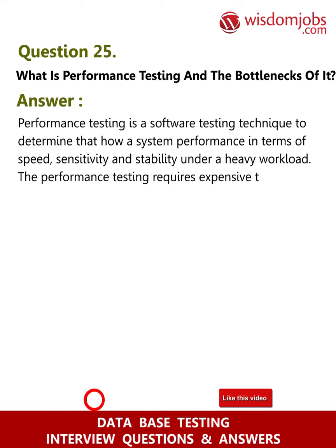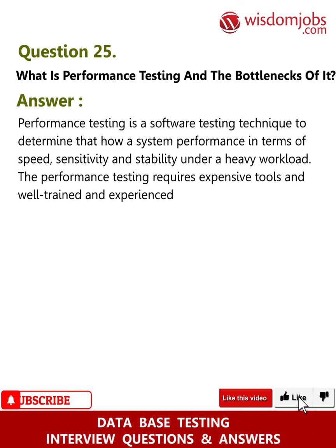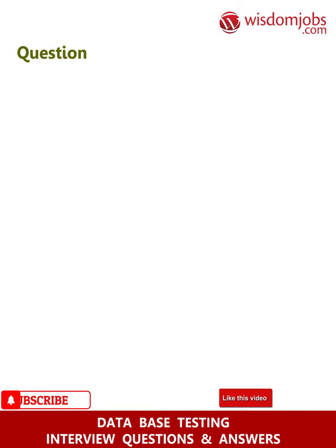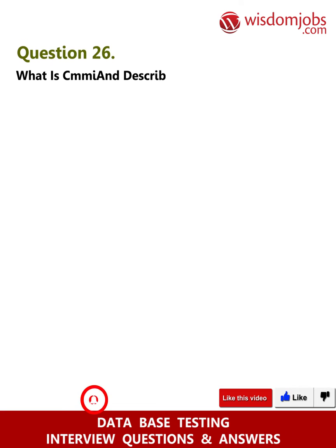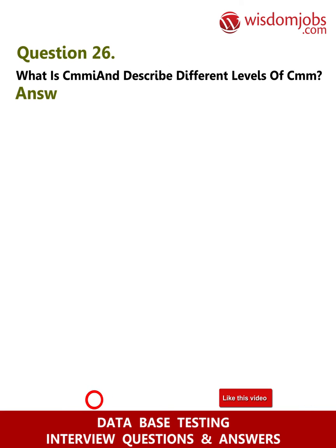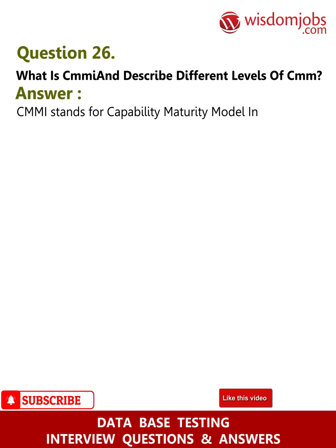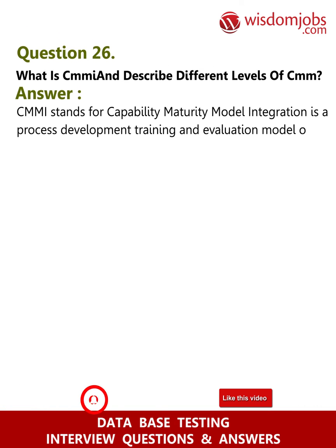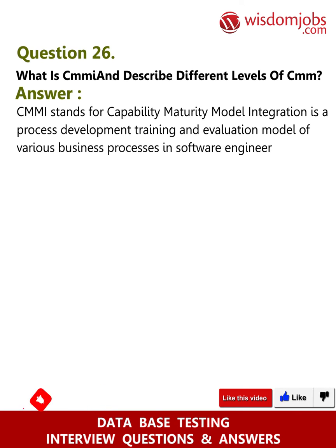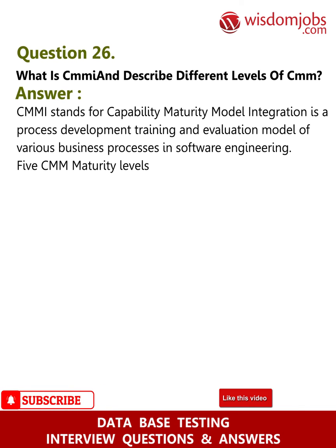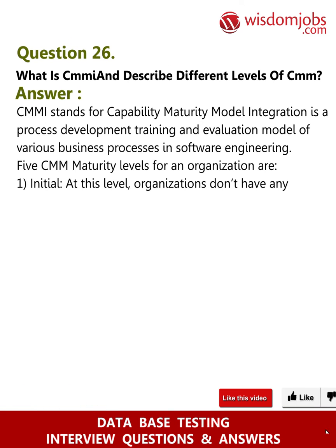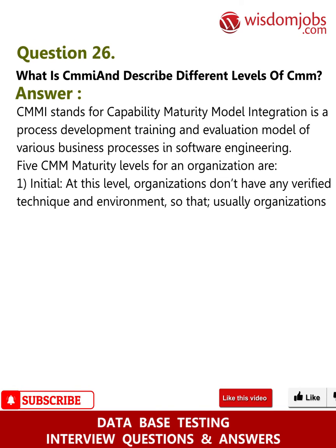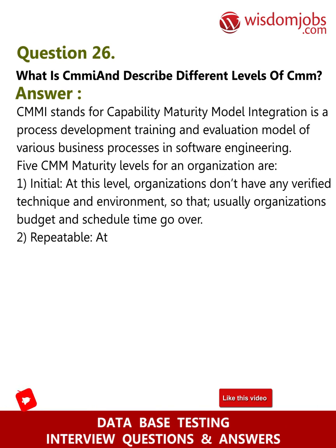Question 26: What is CMMI and describe the different levels of CMM. Answer: CMMI stands for Capability Maturity Model Integration and is a process development, training, and evaluation model of various business processes in software engineering. There are five CMM maturity levels. Level 1 - Initial: organizations don't have any verified techniques or environment, so budgets and schedules typically overrun. Level 2 - Repeatable: organizations have basic techniques and guidelines to limit cost and schedule time, capable of repeating the same in similar projects.